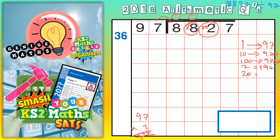20 lots is the same as 2 lots but with a 0 on the end. So 194 with a 0 on the end. 200 lots is the same as 194 with 2 zeros on the end. And 5 lots is half of 10 lots.